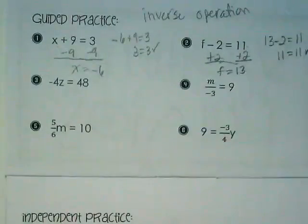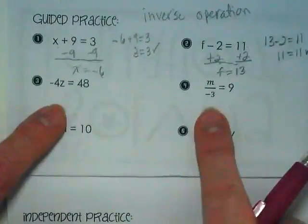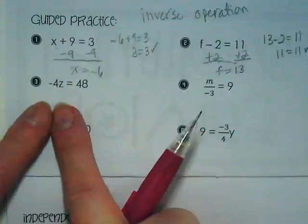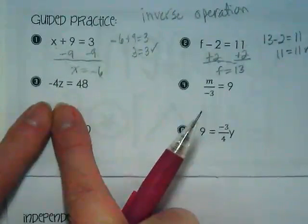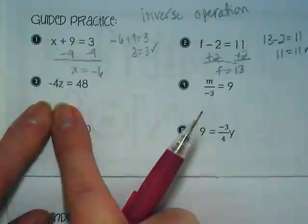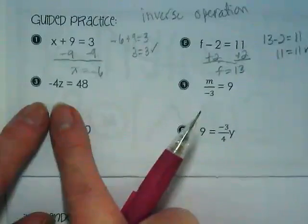I find typically people who've made it into algebra have no problem with those. Where mistakes start to happen is when we get into multiplication and division. This one is multiplication. What is being multiplied here? Negative 4 and z. What is the inverse operation of multiplication? So I need to divide that negative 4.